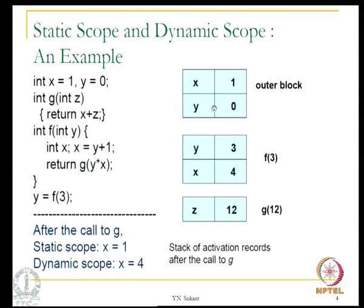This is the main program activation record, and this is the activation record for the invocation of function f. Within this there is a local variable x, so there is no ambiguity — this x and this x both refer to the local variable x, and it calls g. When we go to g there is no x here, so the global variable x is used under static scope. The value of the global variable is 1 and that is what is returned by g.